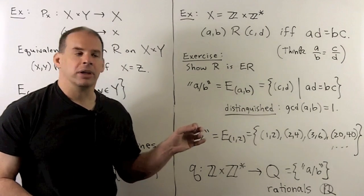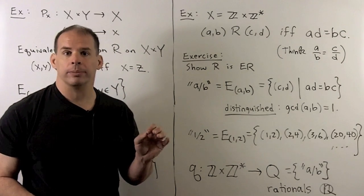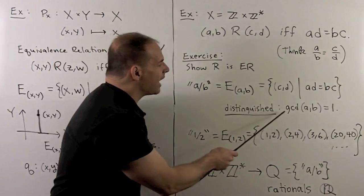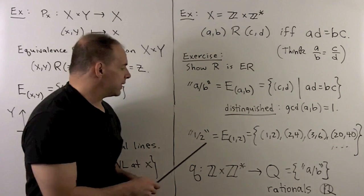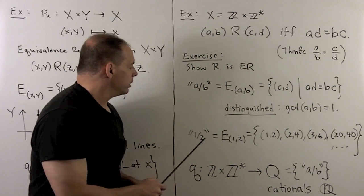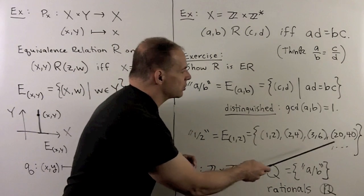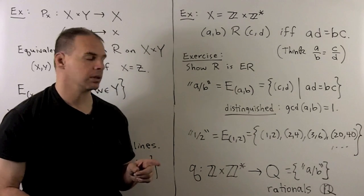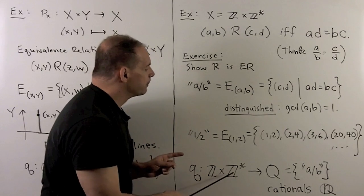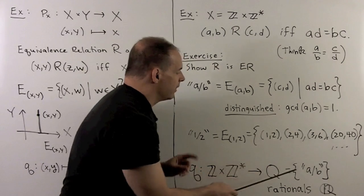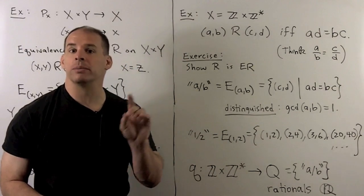In here, there's going to be a distinguished element. That'll be A divided by B where A and B have no common factors. So, it'll be in reduced form. Another way to say that, greatest common divisor of A and B is equal to 1. For an example, if I take equivalence class for the pair 1, 2, so that's supposed to represent 1 half. We have pairs like 1, 2, 2, 4, 3, 6, 20, 40, and so on. Now, the quotient map itself, what is it doing? It's just going to take each of these pairs, send them to their class. And then, in this class, we have the distinguished element given by the reduced form. So, that's how we construct the rational numbers from the integers.